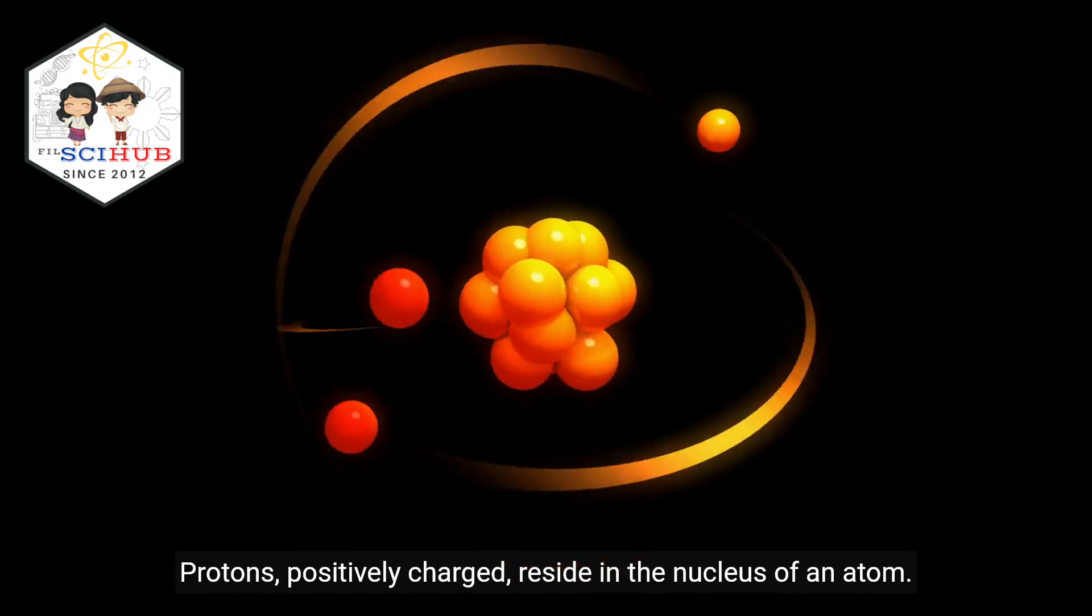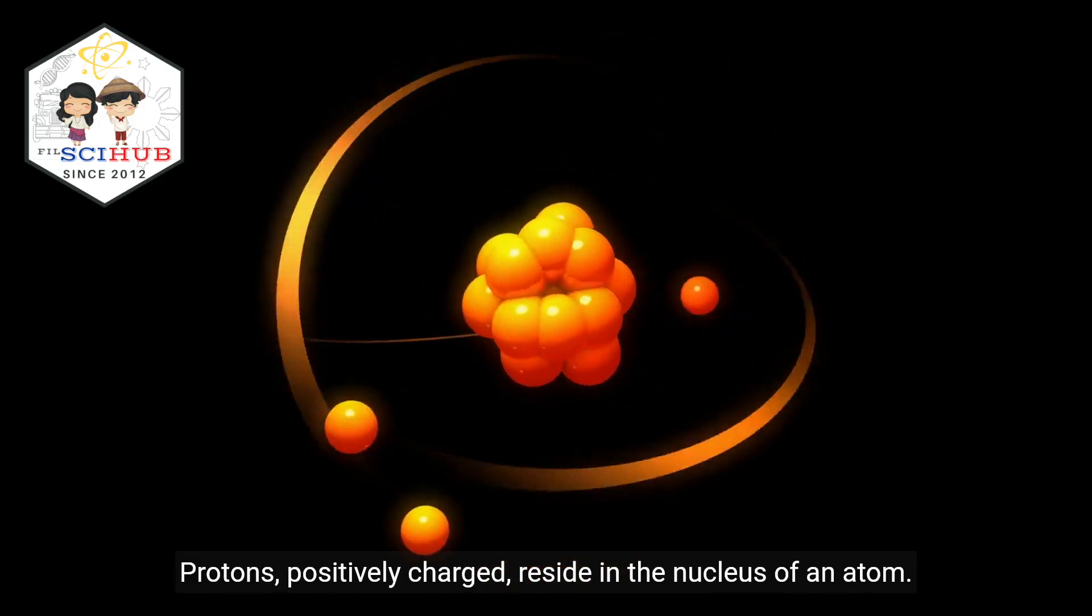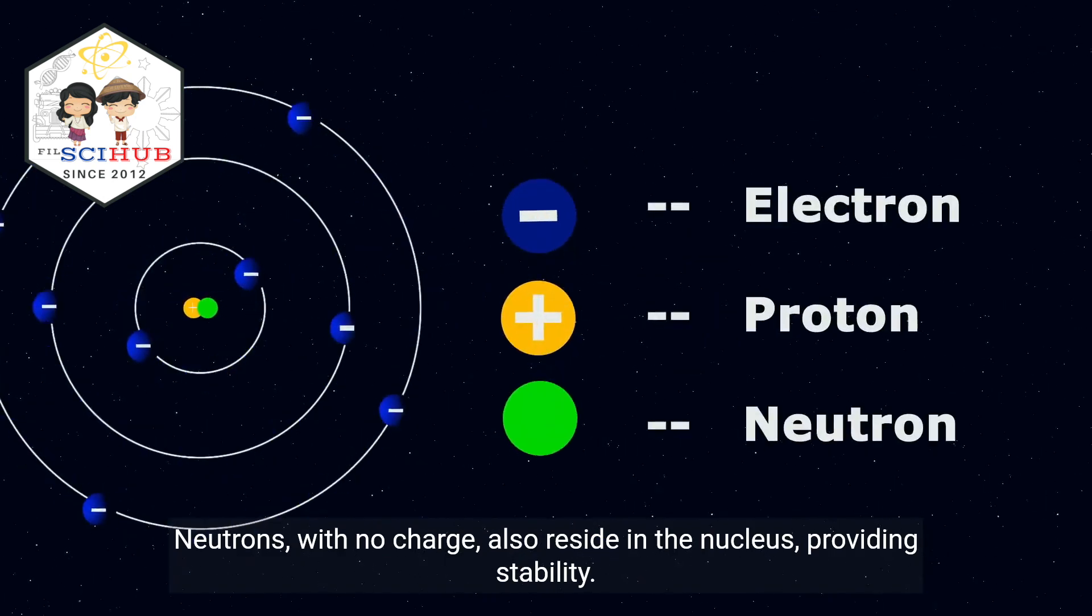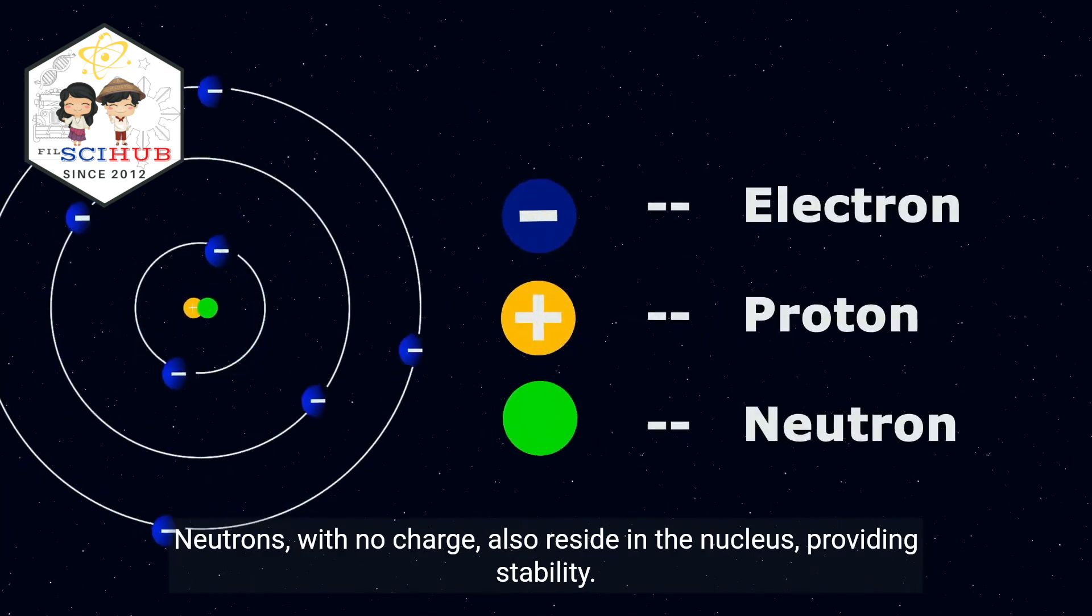Protons, positively charged, reside in the nucleus of an atom. Neutrons, with no charge, also reside in the nucleus, providing stability.